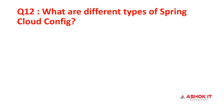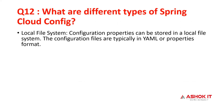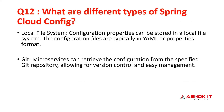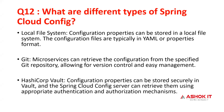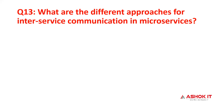What are the different types of cloud config? You can use a local file system with a properties file or YAML file — generally used for testing purposes. You can use Git vendors like GitHub, GitLab, or Bitbucket, which is the most used approach for version controlling and managing configurations. You can also use HashiCorp Vault, generally for securing sensitive properties like passwords, tokens, and access keys, accessed through authentication and authorization mechanisms.